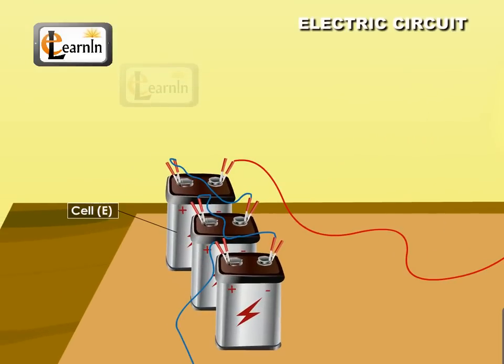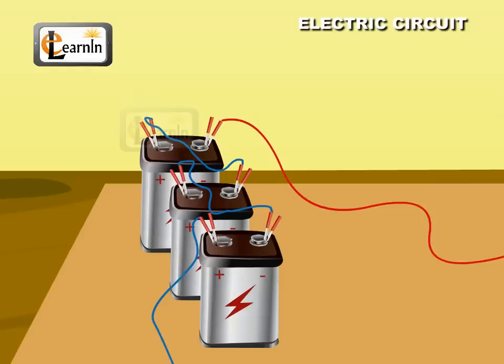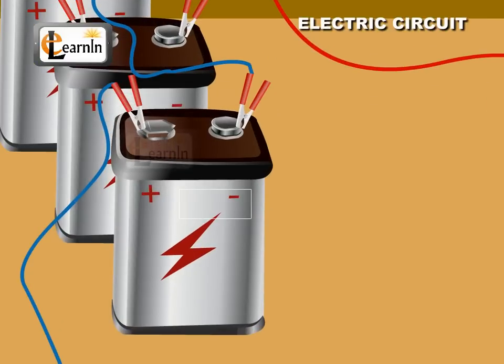A cell is represented by the symbol E. The long line with positive sign indicates the positive electrode, and the short line with negative sign indicates the negative electrode.